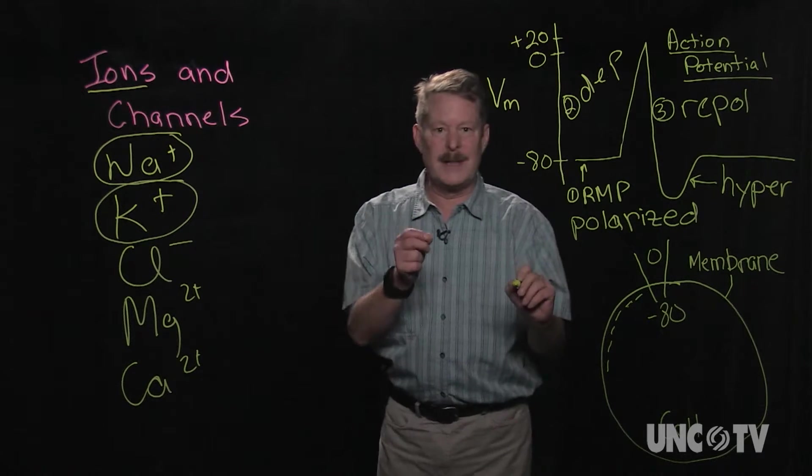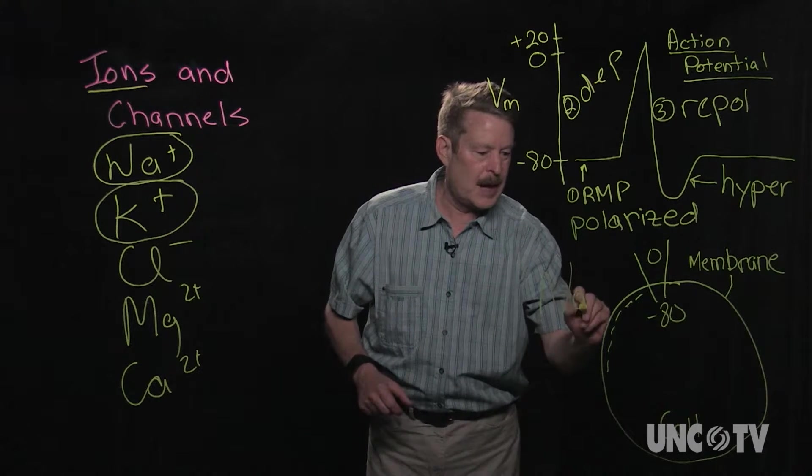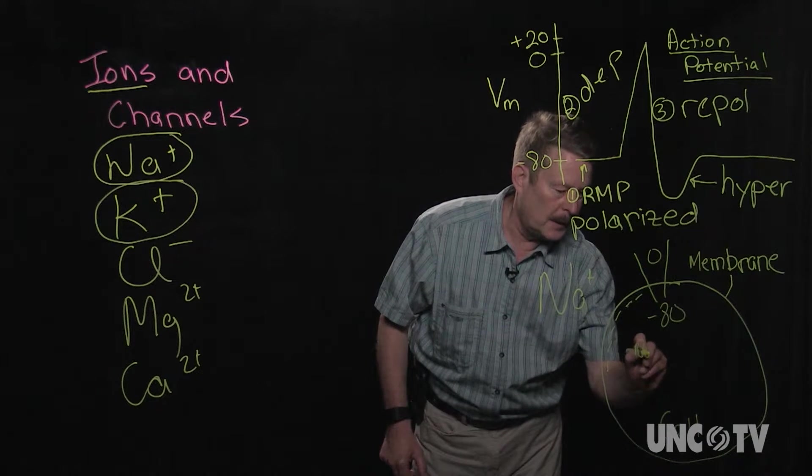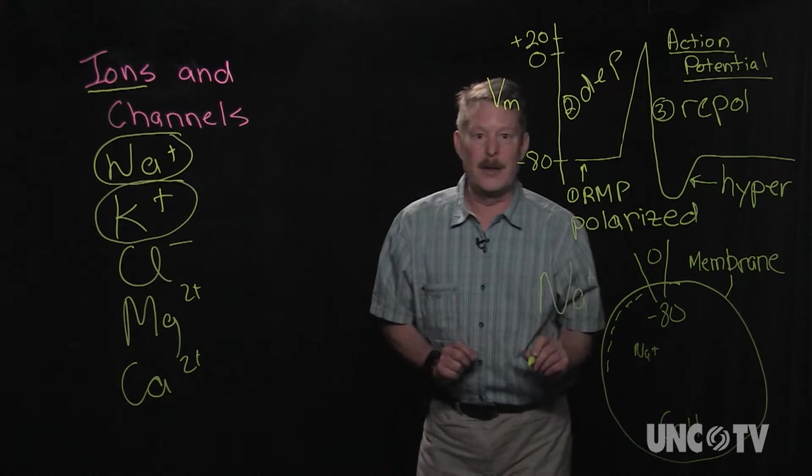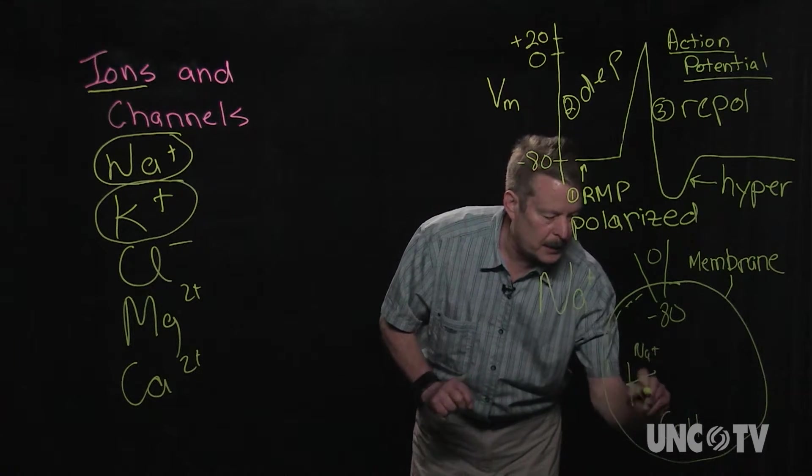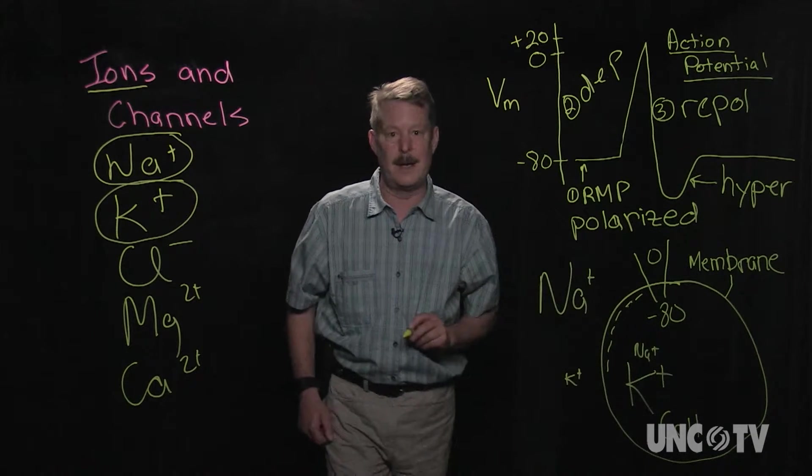As it turns out, sodium is much higher outside the cell than it is inside the cell. Potassium, on the other hand, is a mirror image. It's much higher inside the cell than it is outside the cell.